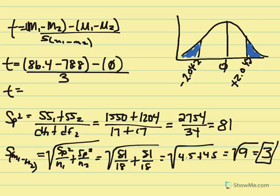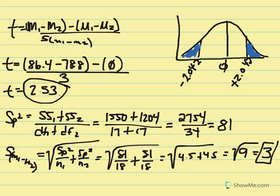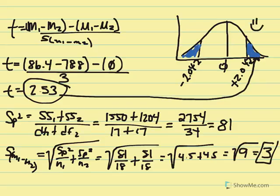Now we have our denominator of 3 to calculate our t statistic. Taking the mean difference 86.4 minus 78.8 and dividing by 3 gives t equal to 2.53. Comparing to our distribution, 2.53 is a positive number that falls into the critical region. We get to reject the null. The probability of obtaining that t statistic is less than alpha 0.05.